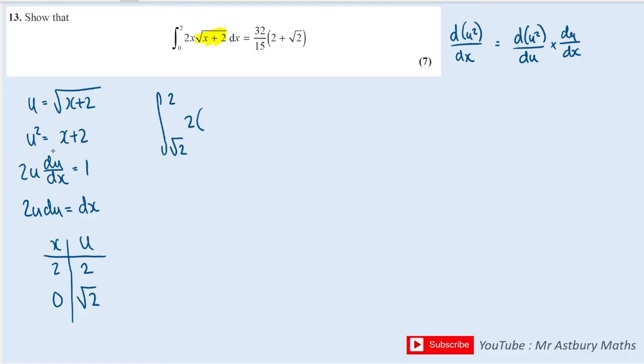x is u squared minus 2. Root x plus 2 is just u, so multiply by u. Finally, dx is 2u du.